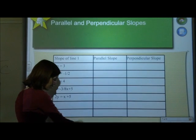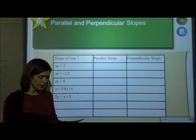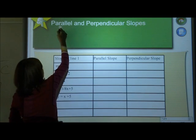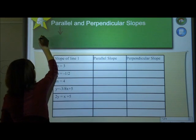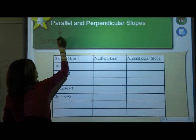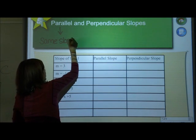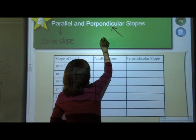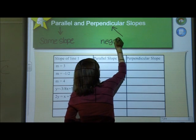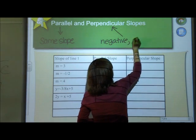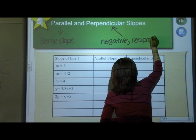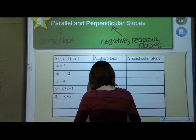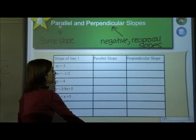Alright. So then the last thing that I want to talk about today is perpendicular and parallel slopes. You may recall from Algebra 1 in Geometry that if two things have parallel slopes, that means that they're going to have the same slope. Perpendicular slopes, if things have perpendicular slopes, we're going to have negative reciprocal slopes.